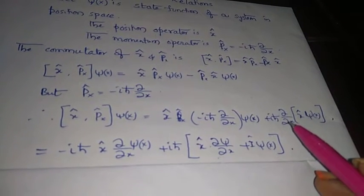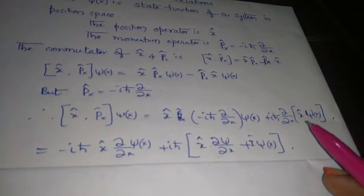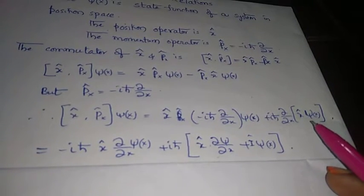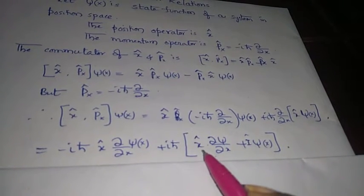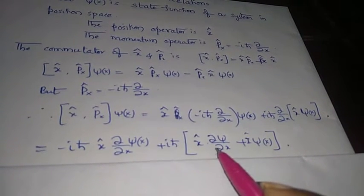If you do the differentiation for x·ψ(x), which we can consider as a uv product, we can put x hat as constant and then do the derivative for ψ.